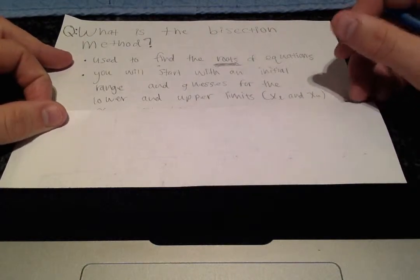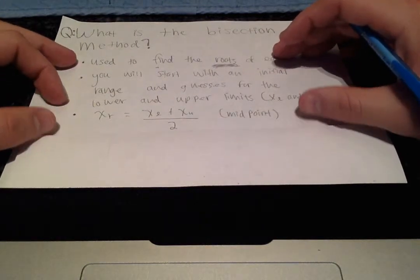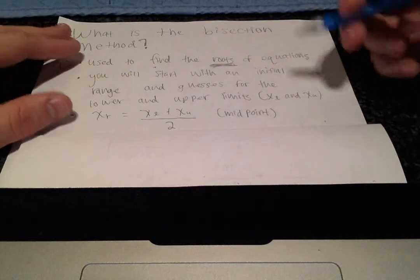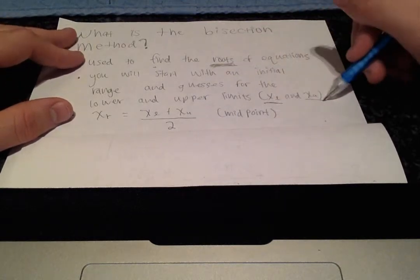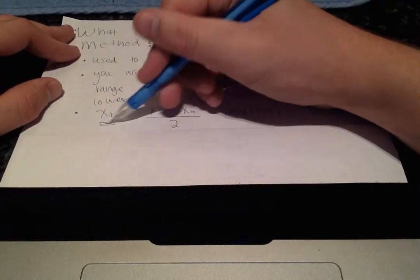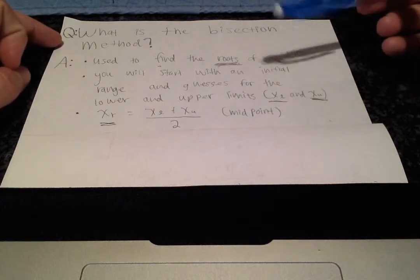And you'll also have the value x sub r, which is x sub l plus x sub u divided by 2. So, it's just the midpoint between the lower and upper limits. And x sub r will actually be your approximation with each iteration.